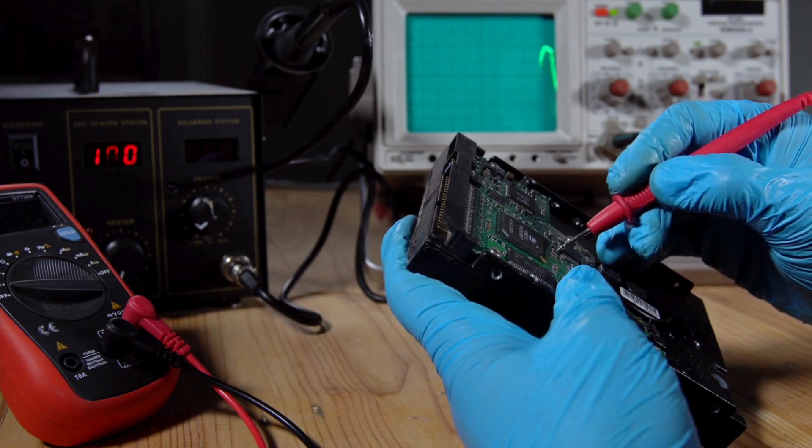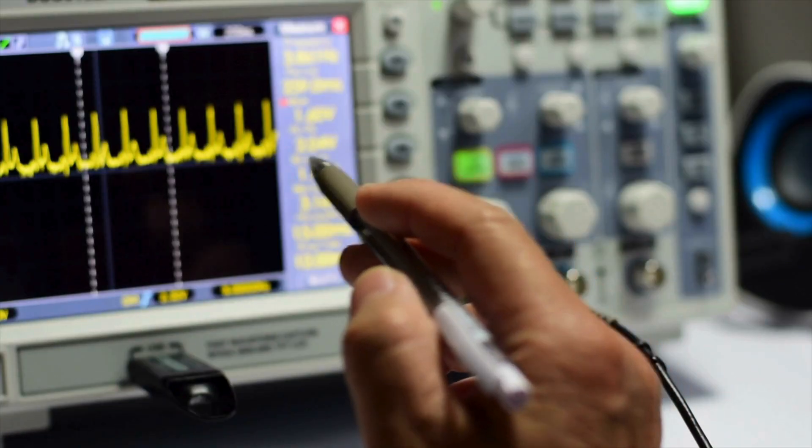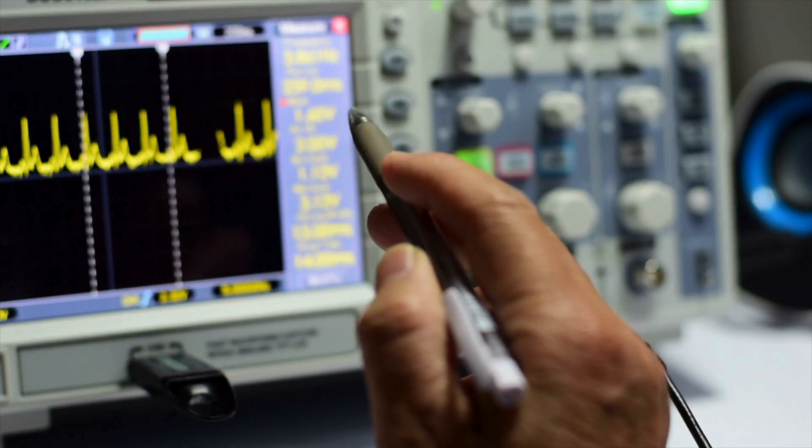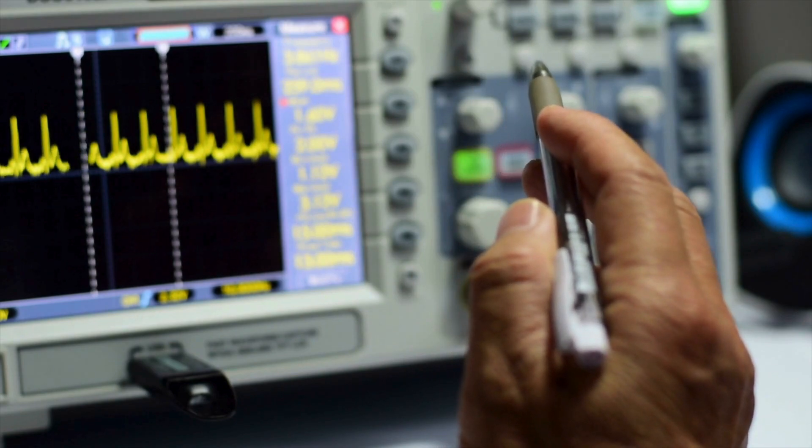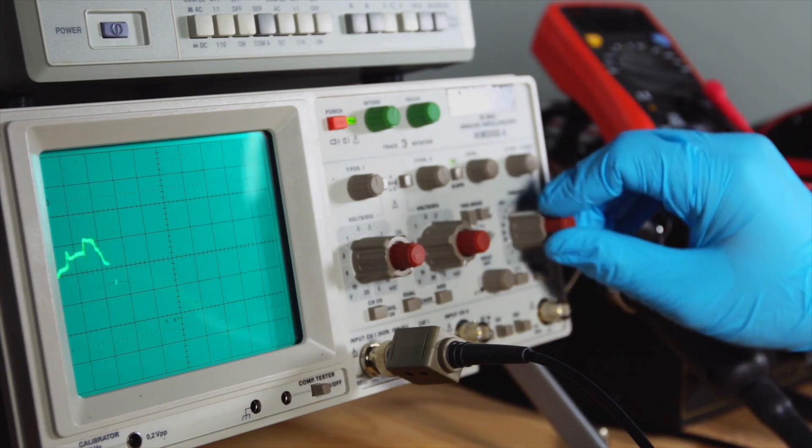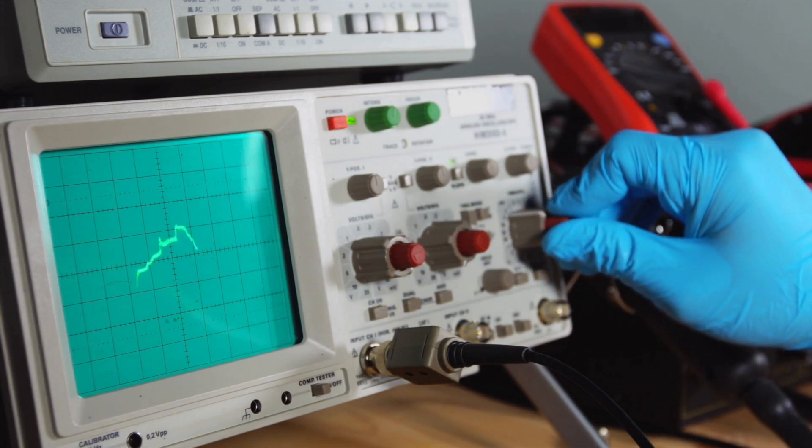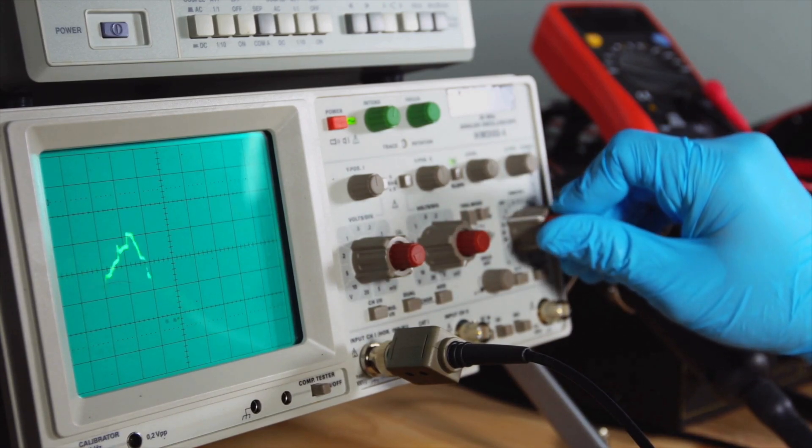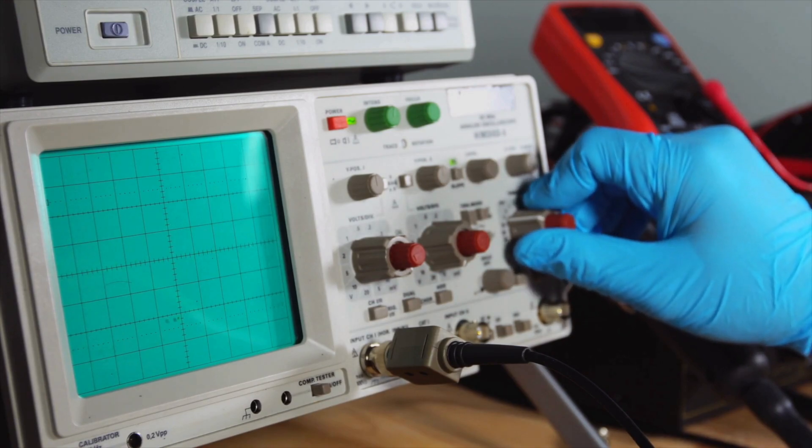When a signal is fed into an oscilloscope, the instrument samples the signal and converts it into visual representation. The vertical system amplifies a signal while the horizontal system determines the time scale. The trigger system stabilizes the display, making it easier to analyze repeating signals.